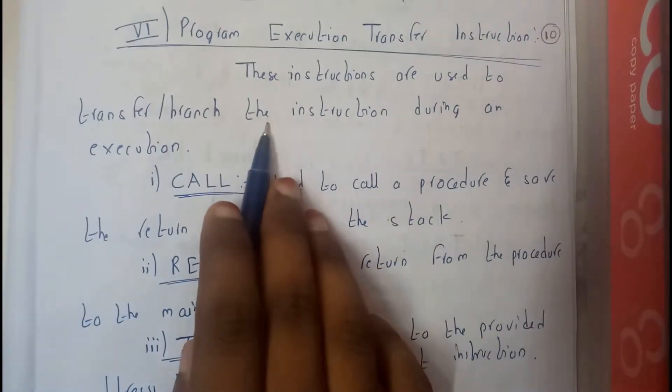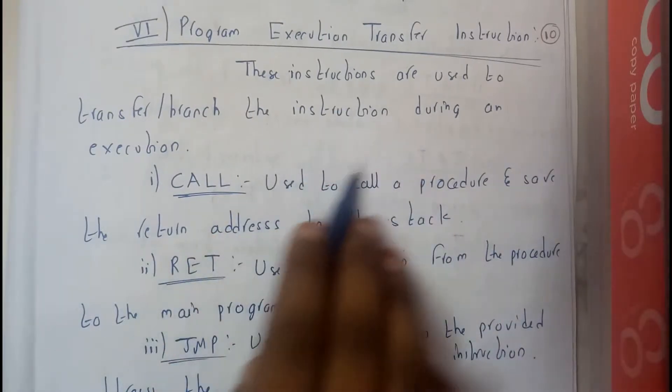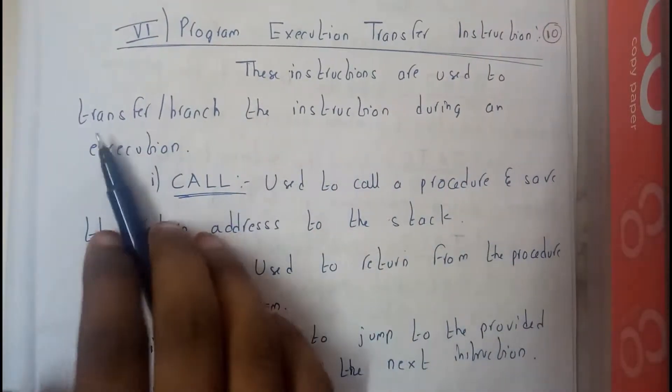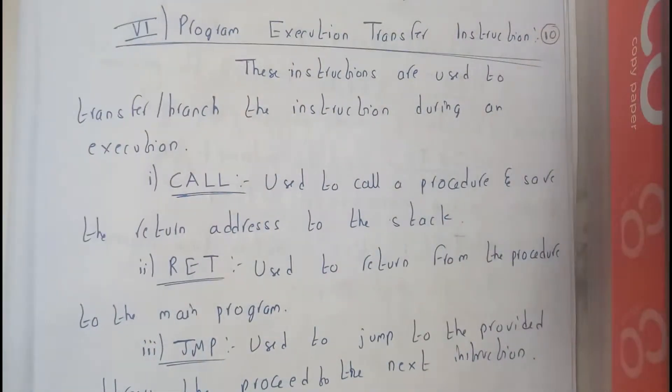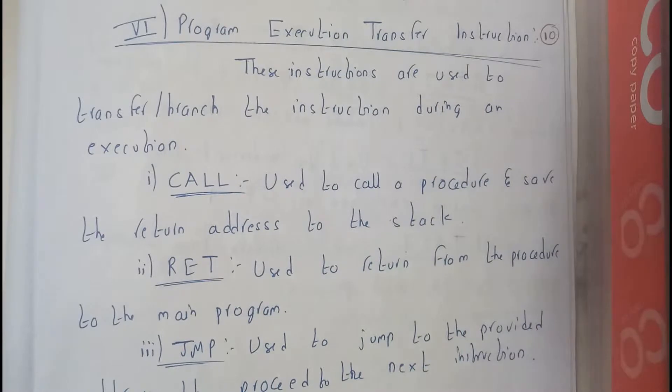So when there is an execution going on and if you find a call or jump statement, you will be jumping to that position or calling that to execute that program first, or return, returning back to the main program. The few important execution transfer instructions are three: